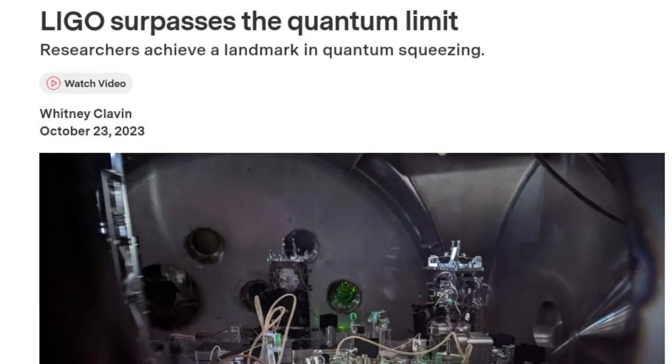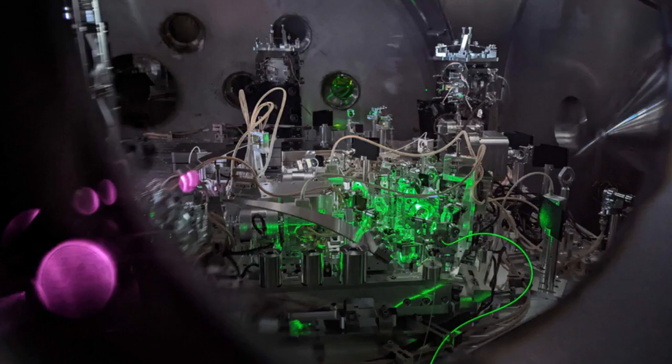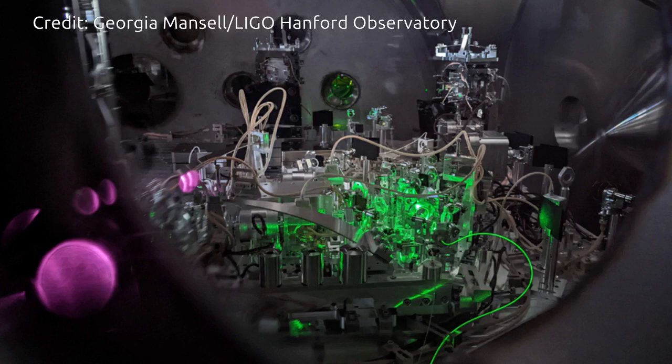In 2015, the Laser Interferometer Gravitational Wave Observatory, or LIGO, made history when it made the first direct detection of gravitational waves, or ripples in space and time, produced by a pair of colliding black holes.